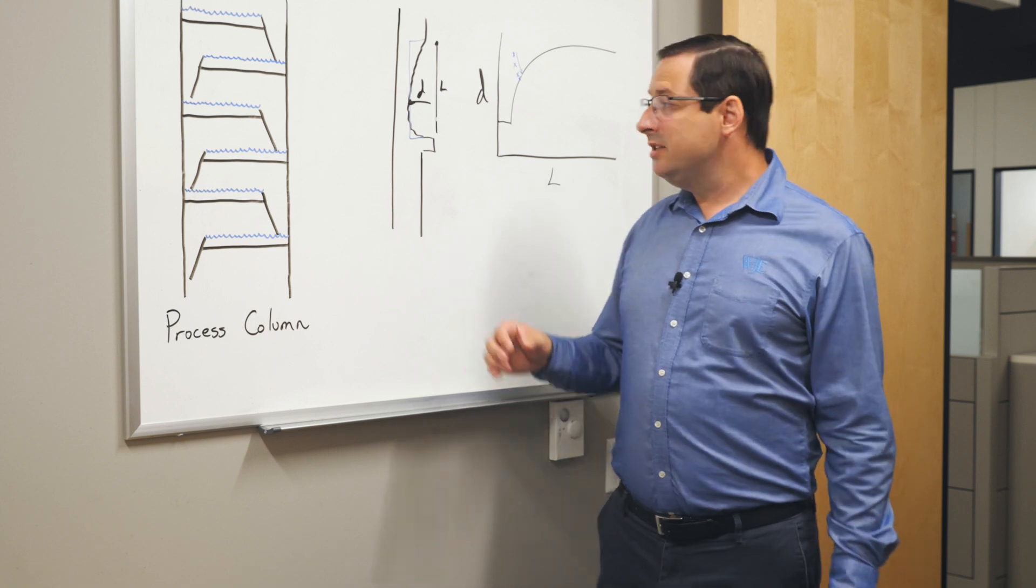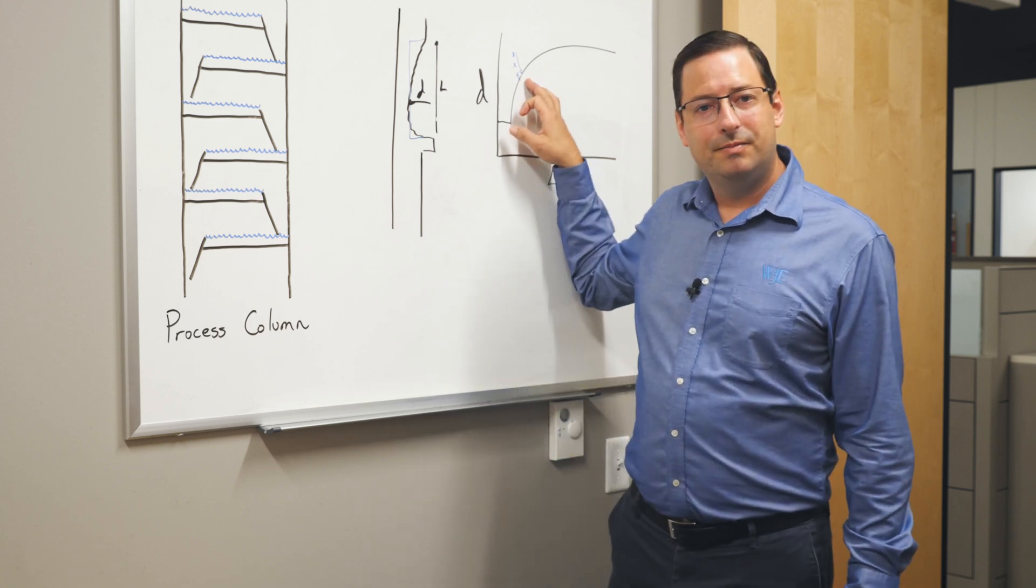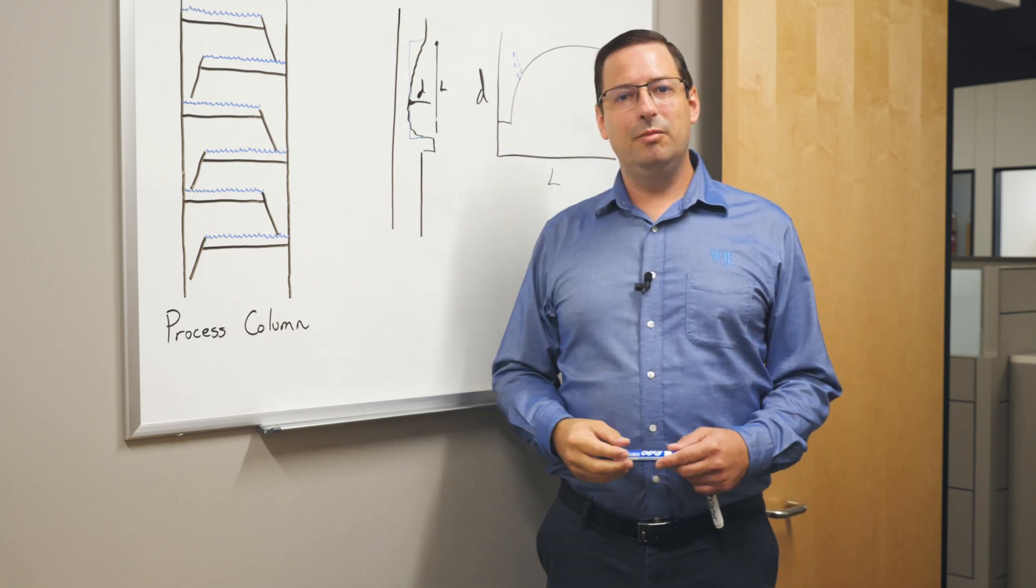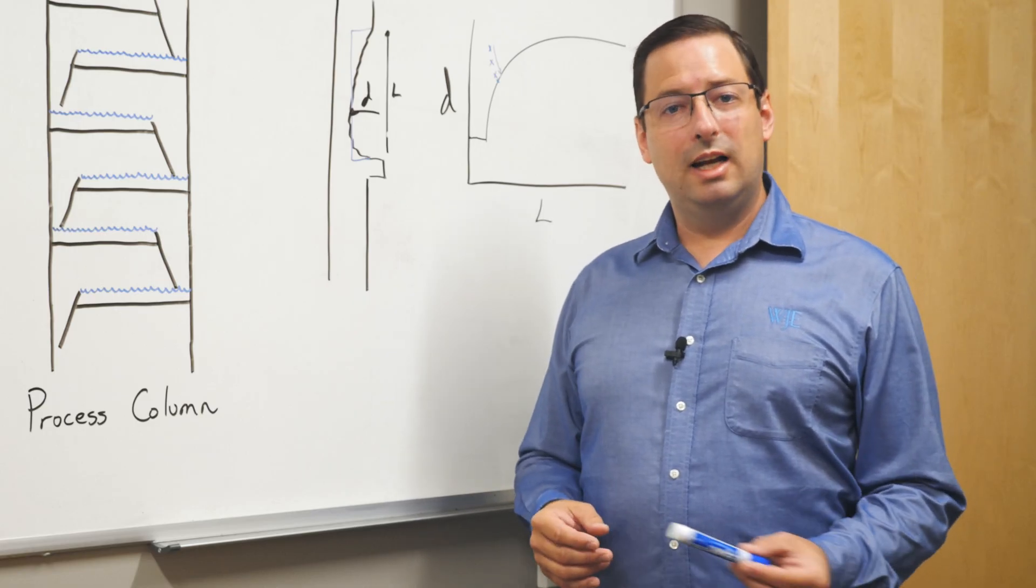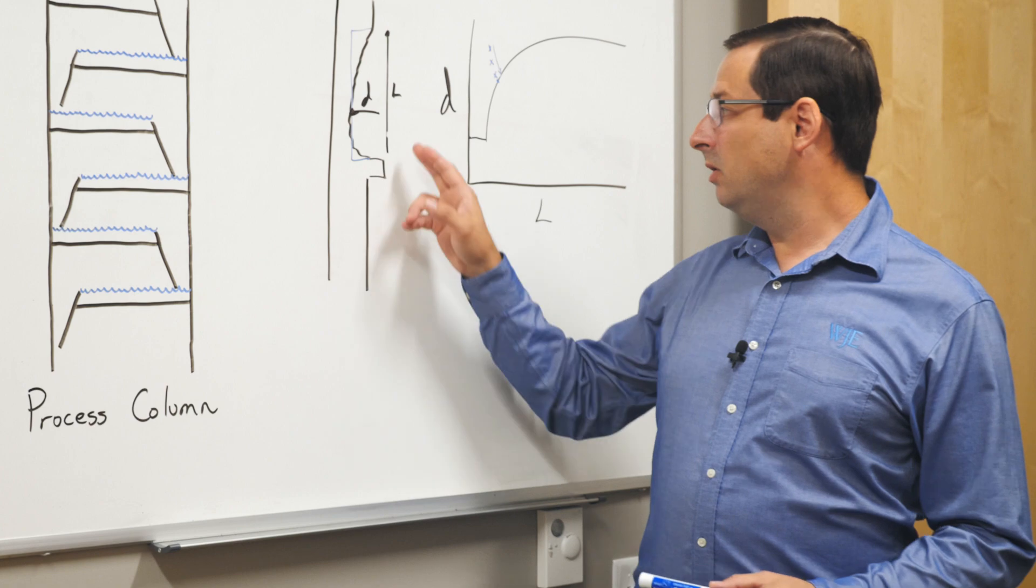But what happens if the vessel exceeds the thickness limits that we've set for ourselves? Does that mean the vessel has to be retired immediately? No. In most cases, we can perform a 579 level 3 assessment of the corrosion that we found.